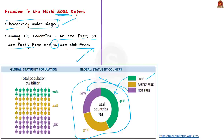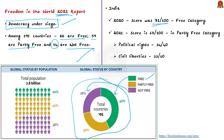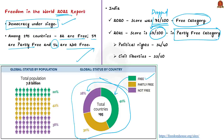Last year India's score was 71 out of 100 and India was in the free category. But the 2021 report says India's score has dropped to 67, and India's status has declined from free to partly free. India's score in political rights is 34 out of 40, but only 36 out of 60 in civil liberties — meaning India has performed poorly in civil liberties, which includes freedom of expression and belief, associational and organizational rights, rule of law, and personal autonomy and individual rights.